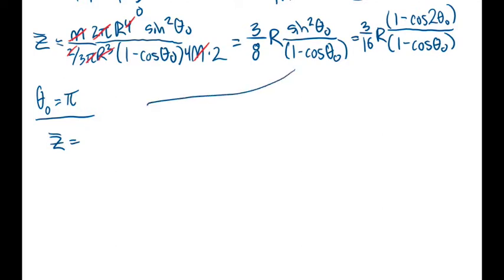3 eighths R sine squared pi is 0. We're done. The center of mass equals 0.